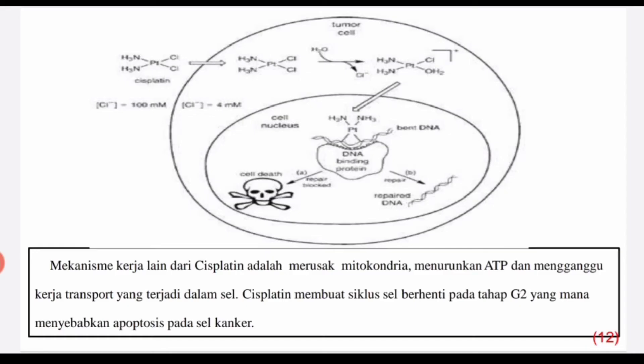Mekanisme kerja lain dari Cisplatin adalah merusak mitokondria, menurunkan ATP, dan mengganggu kerja transport yang terjadi dalam sel. Cisplatin membuat siklus sel berhenti pada tahap G2, yang mana menyebabkan apoptosis pada sel kanker.